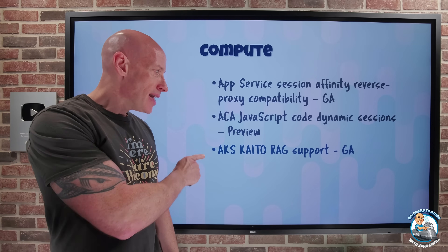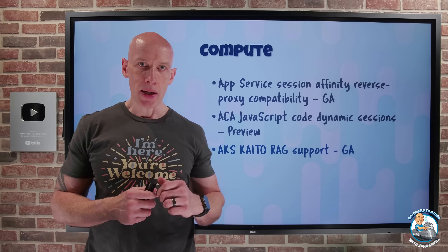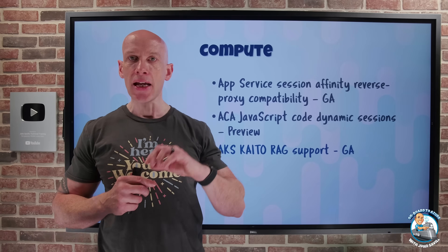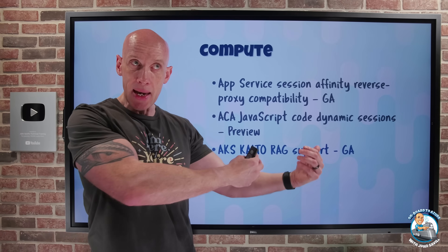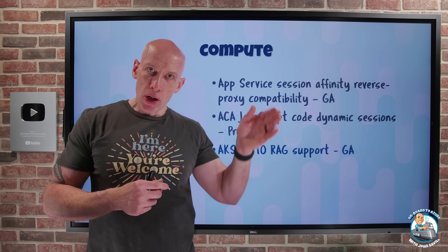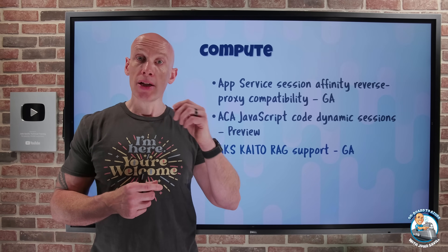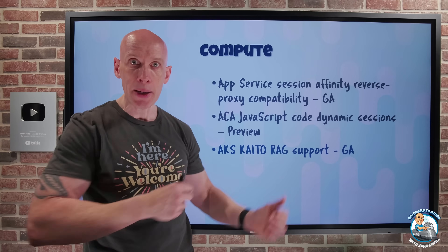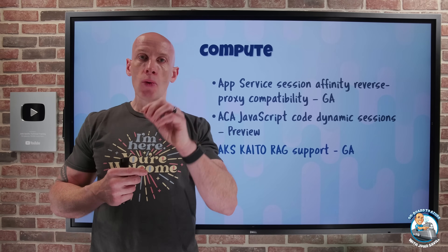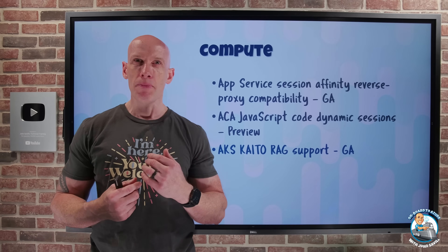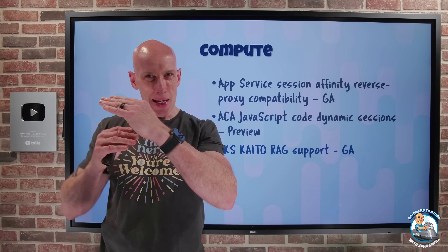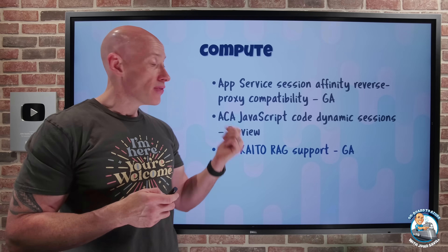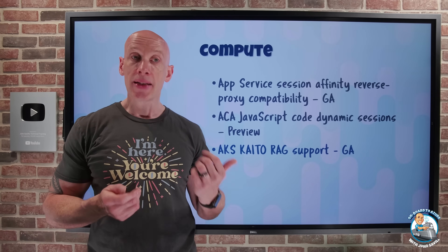The AKS KAITO RAGSapal is now in GA. KAITO is the Kubernetes AI Toolchain Operator, which helps deploy and manage AI models on AKS. With RAG — retrieval augmented generation — it's now possible to add additional knowledge beyond what the model was trained on without additional tuning, by integrating with a vector database. Vector databases are great because they're based on the semantic meaning of the data rather than the actual words, which is important for natural language. So KAITO can now integrate with your vector database.